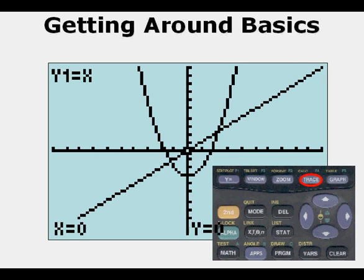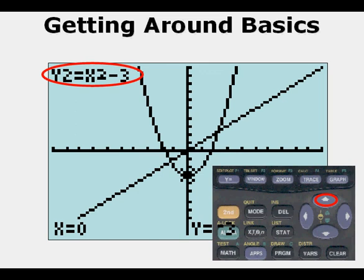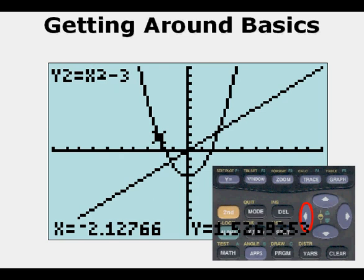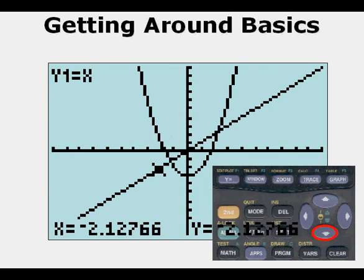If we press the TRACE key, we can see that y1 equals x is being accessed by the trace function as we move left or right. If we press the up arrow key it will get us over to the second function, and from here we can move the left or right arrows and go where we want on the second function. If we press the down arrow key again it takes us back to y1 equals x. So we can use the up and down arrows to change between functions, and once we get on those functions we can use the left or right arrows.